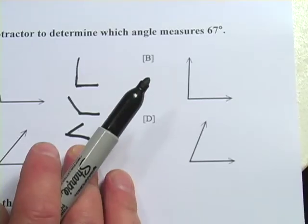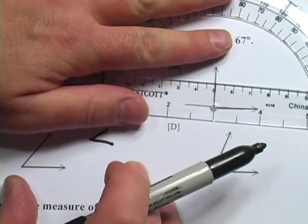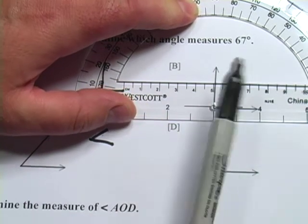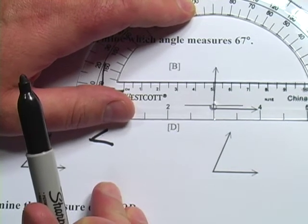If I stick my protractor on there and try to get it lined up right, it looks like it's going to point just shy of 90, maybe 85 degrees, maybe 87 degrees.